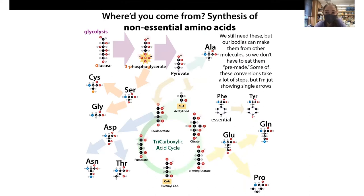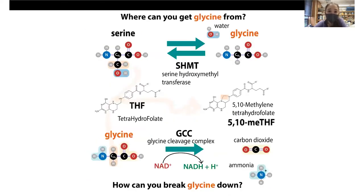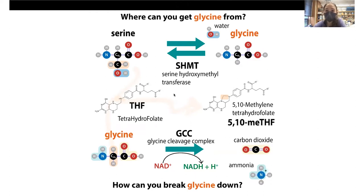Glycine is what we call a non-essential amino acid. That doesn't mean we don't need it — our bodies do need it — but our bodies can also make it. Glycine gets made from serine. There's an enzyme called serine hydroxymethyltransferase, and basically serine has a CH₂OH group as its side chain. This enzyme, with the help of the cofactor THF, can remove that group to give you glycine.